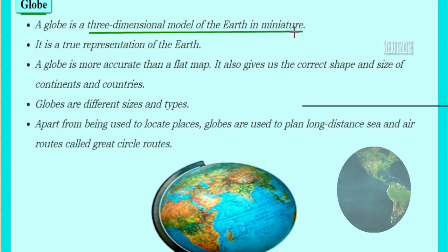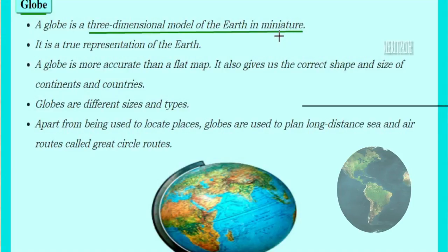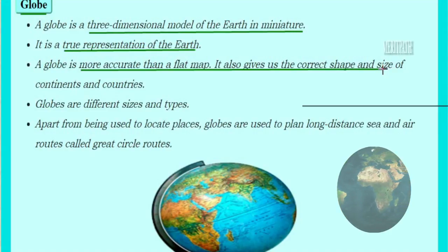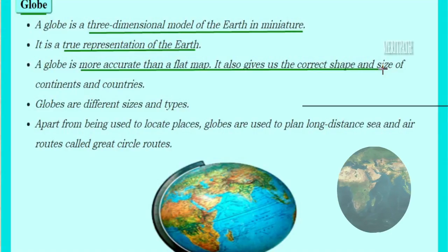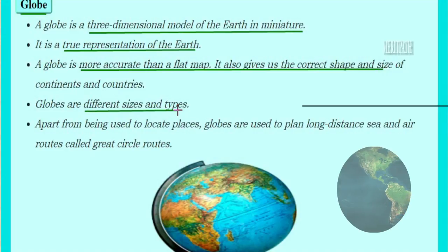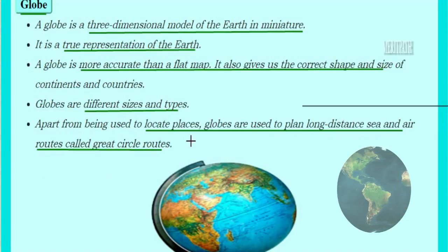A globe is a three-dimensional image, a 3D model of the earth in miniature — representing the total earth in smaller form. It is a true representation of the earth, so a globe is more accurate than maps. A globe also gives us the correct size and shape of different continents as well as different countries. Globes come in different sizes and types.